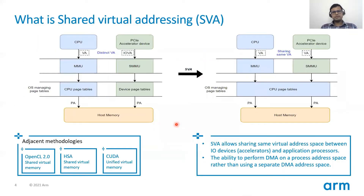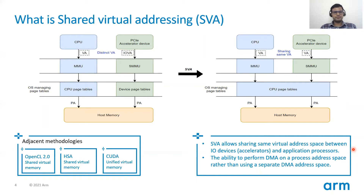So SVA provides a solution for this. SVA allows sharing the same virtual address space between an IO device or the accelerator and the application processes. It gives accelerator devices the ability to perform DMA on the process address space rather than a separate DMA address space.